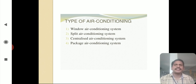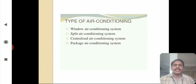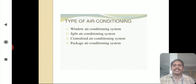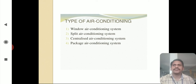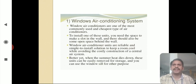There are several air conditioning systems available today: the window air conditioning system, split air conditioning system, centralized air conditioning system, and packaged air conditioning systems. Which one you choose depends upon the furniture, the volume of the room, the budget, and the requirement — how much space you need to condition and how much temperature you need to maintain.